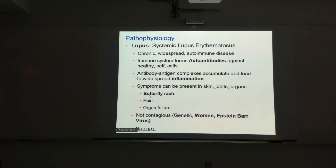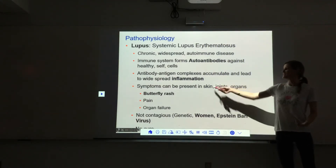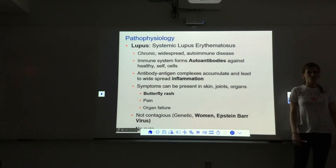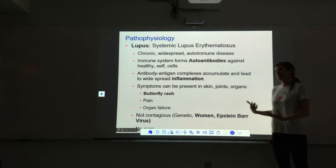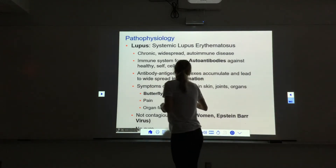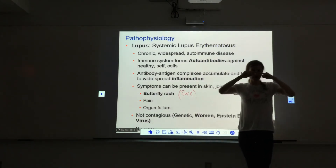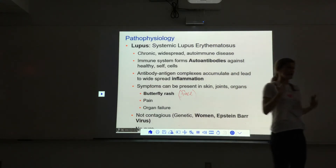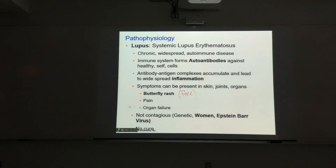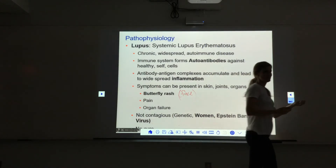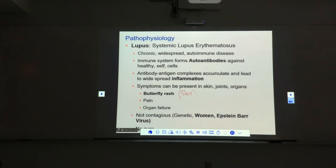Symptoms are really everywhere — skin, joints, and organs like kidneys, blood vessels, and the liver. A key sign is a butterfly rash commonly seen on the face — redness that radiates out with little wings across the cheeks, like a butterfly. Pain is chronic and hard to deal with because of all the inflammation occurring. Ultimately, organ failure can occur — kidneys, vessels, any number of organs, depending on the person.